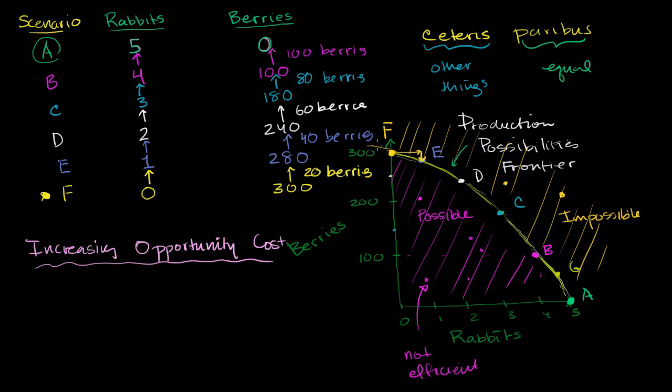or another way to think about it, in scenario F, the slope is roughly like this. And I encourage you to review the algebra playlist if the idea of slope is confusing to you. But at F, the slope is like that. I'm drawing the slope of the tangent line right over here. At E, it gets even steeper. You're giving up even more. You're giving up even more of the berries per unit rabbit. And now in D, you're giving up even more. Then you're giving up even more. And so this, whenever you see a bow-shaped curve like this, so a curve that literally looks like this, this shows that you have increasing opportunity cost. As you increase more and more units, you're going to have to give up more and more of the alternative.